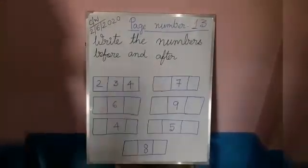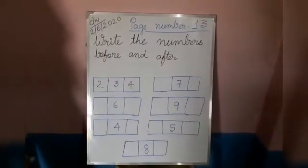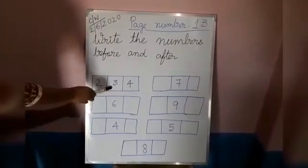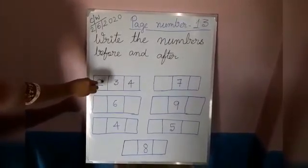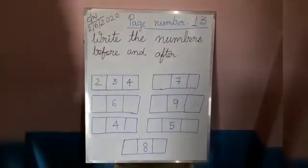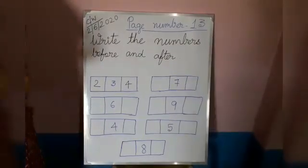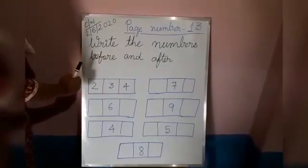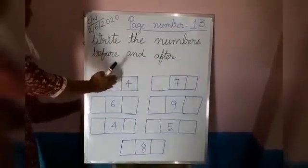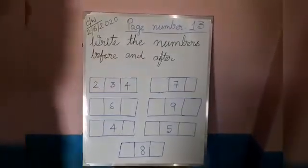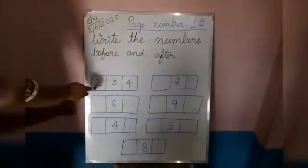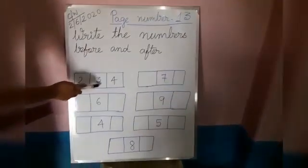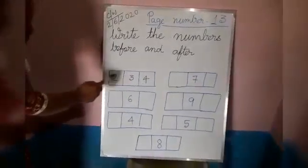Now, you can see in your book only one example is given. Here is three in between. You have to write the before number and after number. If you remember, for before number we have to go for backward counting and for after number we will do forward counting. Now look here, 2 is the before number of 3 and 4 is the after number of 3.